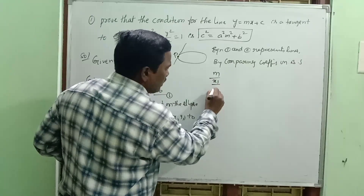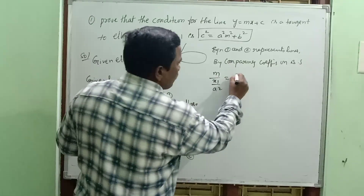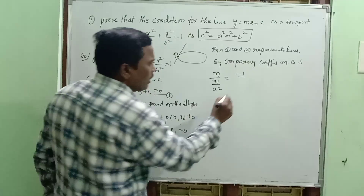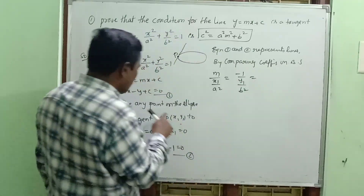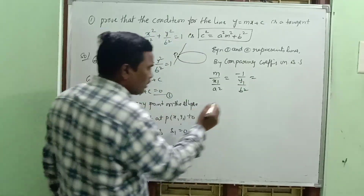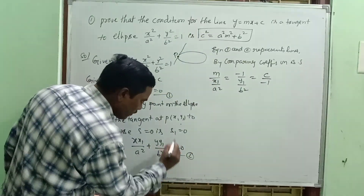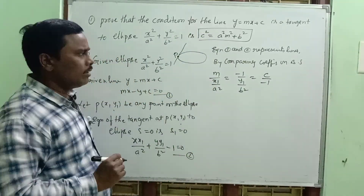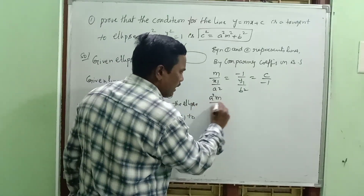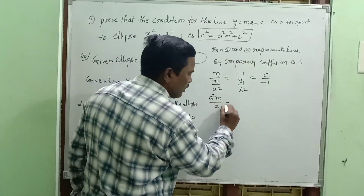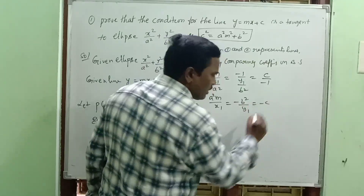Comparing coefficients: x coefficient gives x1 by a square, y coefficient gives y1 by b square, and constant is minus 1. By comparing with mx minus y plus c equal to 0 and taking reciprocals, we get: a square m by x1 minus b square y by y1 equal to minus c.